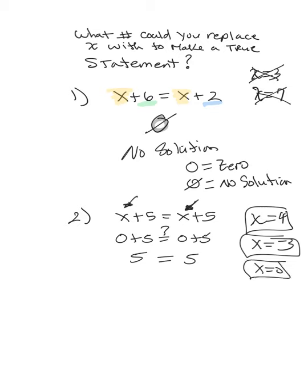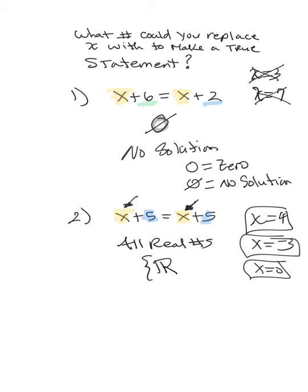So will you ever find one that doesn't work? No — no matter what you pick, it's always going to work. Because you're taking the same number and adding the same number, so obviously it's going to work every single time. Every number on the number line is going to make a true sentence. We say that's all real numbers, and sometimes we write a fancy R to represent all real numbers. This is called an identity.